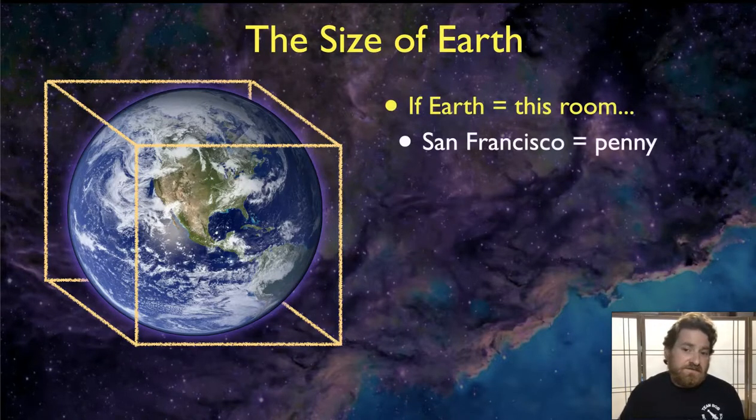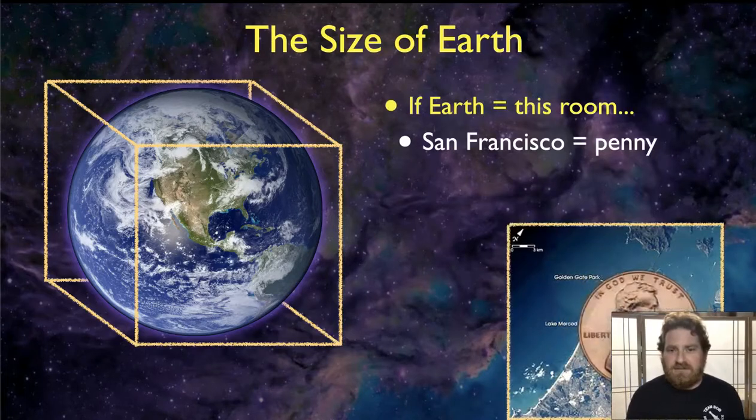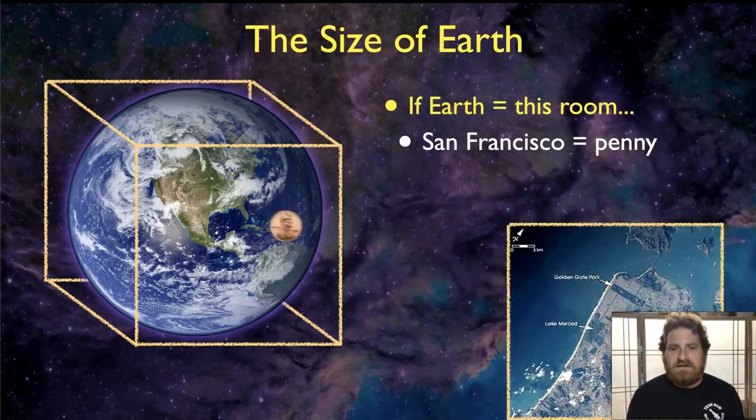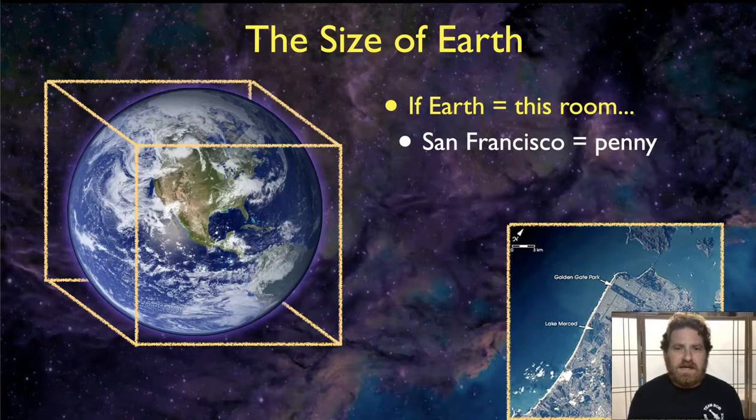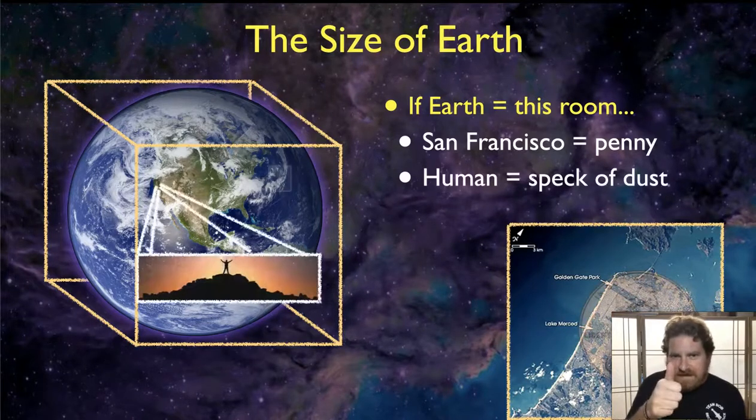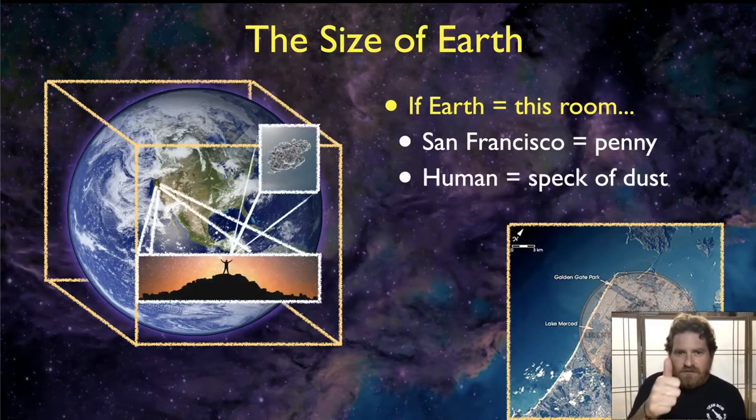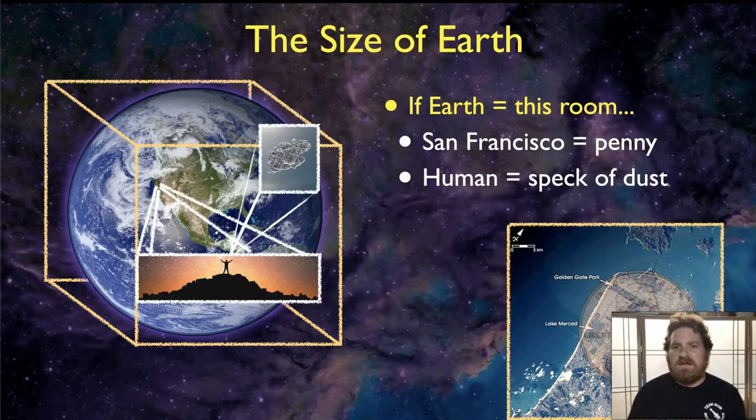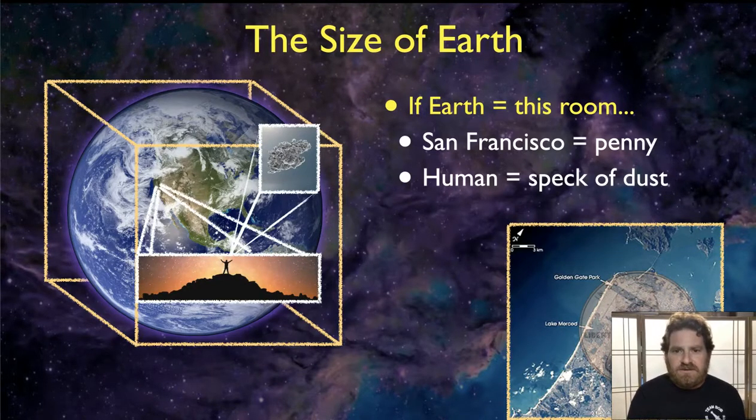And the answer is, if the Earth were the size of this classroom - imagine we're in one - San Francisco would be about the size of a penny, about the size of your thumbprint. And inside of that thumbprint lives hundreds of thousands of people. And on this scale, a single human being would be about the size of a speck of dust.